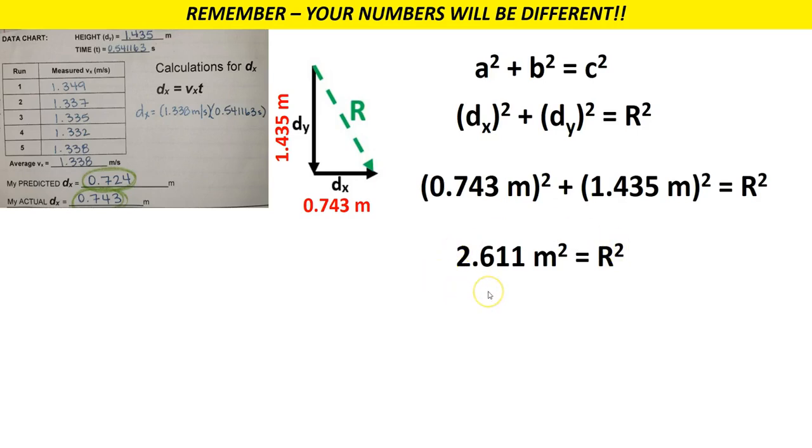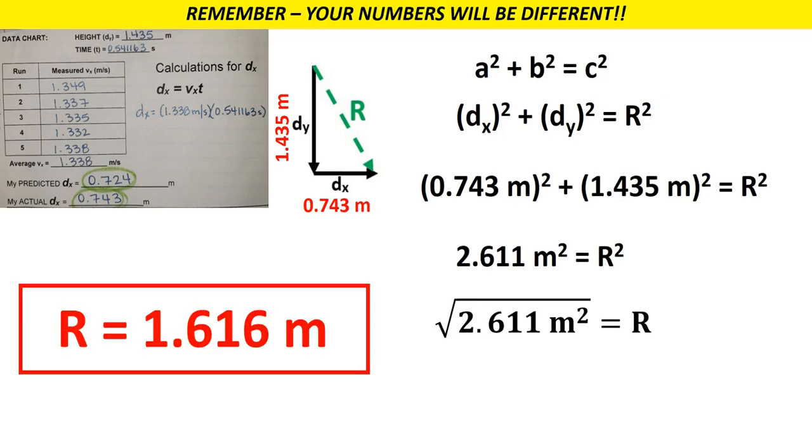You need to take the square root of that in order to find your final answer, which in my case is 1.616 meters. And again, check yourself. It should be larger than either of your two legs, but not a whole lot larger than your dy.